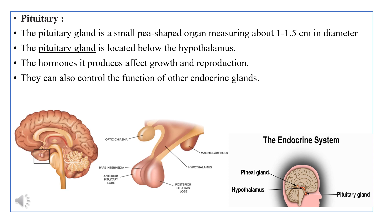After the hypothalamus and pineal gland, which are situated in the brain region, the next gland also located in the brain region is the pituitary gland. The pituitary gland is a small pea-shaped organ, about 1 to 1.5 centimeters in diameter. It is a very small gland — only about the size of a pea — but it has a very big job. It is located below the hypothalamus at the base of the brain, and the hormones it produces affect growth and reproduction.